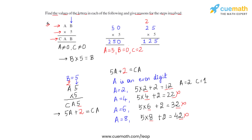For the second set of values, we have a equals two, b equals five, and c equals one. This is the set of values we got when a is an even digit. Now let us check what the possible values of a, b, and c are when a is an odd digit.